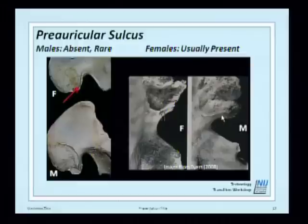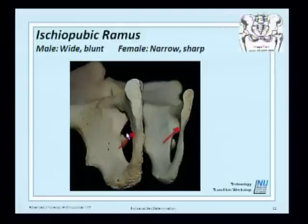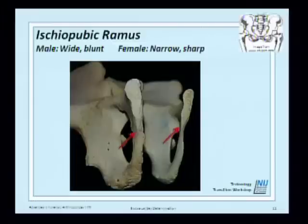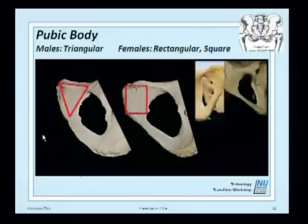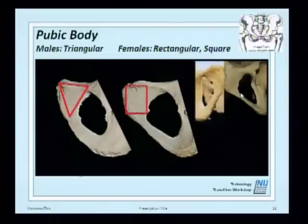On the male, you do not see a depression in the preauricular region; on the female, you see a slight groove. The ischiopubic ramus, located inferior to the pubis, is wider or blunt on males and more narrow or sharp on females — related to overall muscle size in males. The pubic body, located at the front, tends to be triangular in males and rectangular or square in females, related to the subpubic angle. The female is more square-shaped because the subpubic concavity is larger than in males.